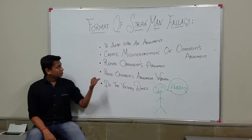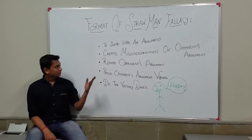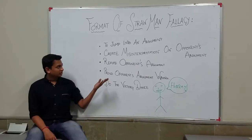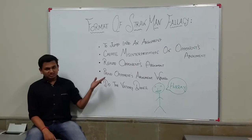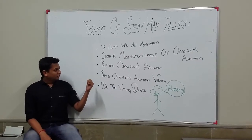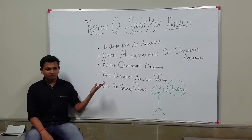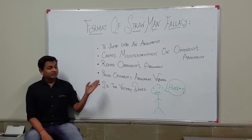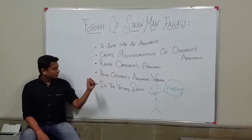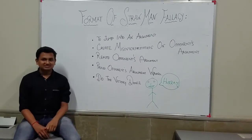To engage in a Straw Man fallacy, first you jump into an argument, then you create a misrepresentation of your opponent's argument — which can be intentional or unintentional. Then, by refuting that misrepresented argument and proving it wrong, you try to prove your own argument correct. After that, you do the victory dance.